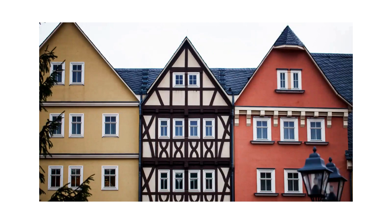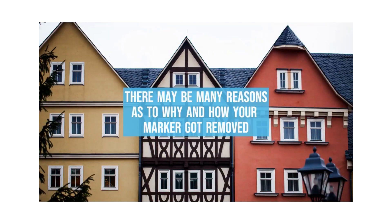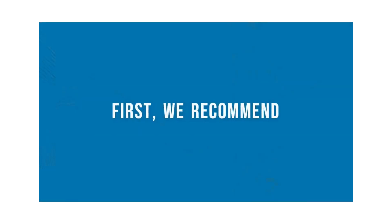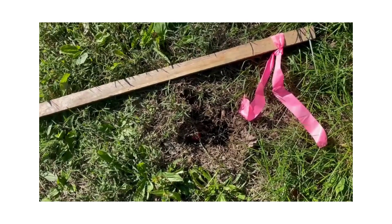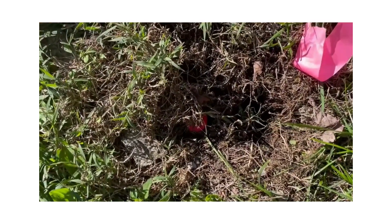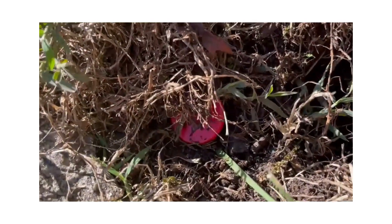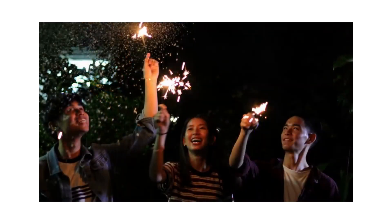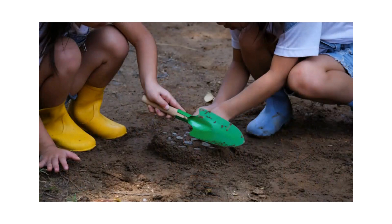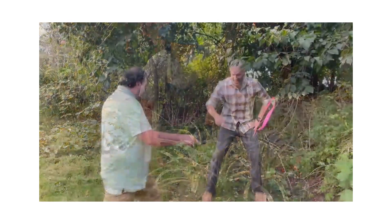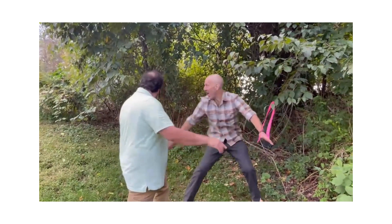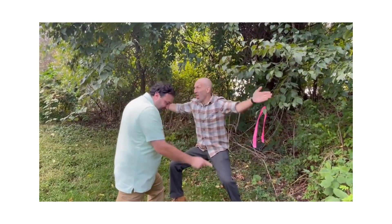We always recommend solving any issues amicably. There may be many reasons as to why and how your marker got removed, so it's important to try and solve the issue between you and your neighbor first. We recommend that you take a real good look for that property marker — if it's been there for a long time it could easily be buried. Someone may have removed the lath or flag indicator and not the actual property marker itself. Then we recommend to talk it out. He or she may have removed the markers while setting up for a party, their children may have pulled it out, or they might have removed it while gardening because they were not aware it was a property marker.